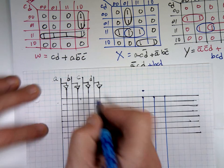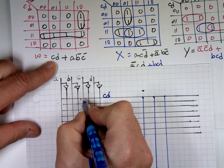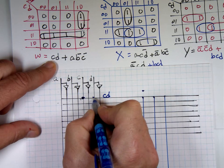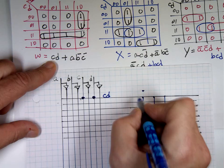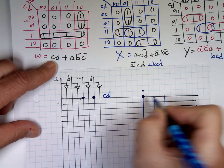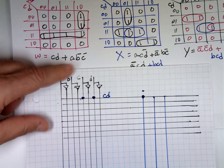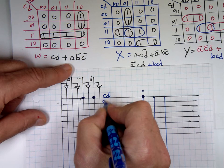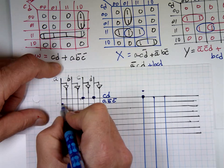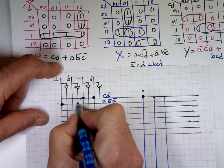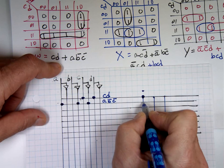The first product term is CD — attach C and D to it, and only W is on. The next function is AB̄C̄ — attach A, B̄, C̄ to it, and that's only W.